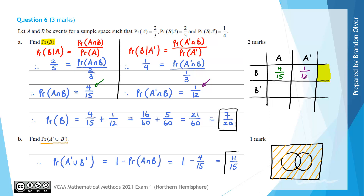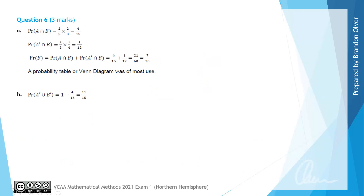From the examiner's report, we can see that the answer to part A was 7/20, and that a probability table or Venn diagram was of most use to students. For part B, the answer was 11/15, which matches what we found.